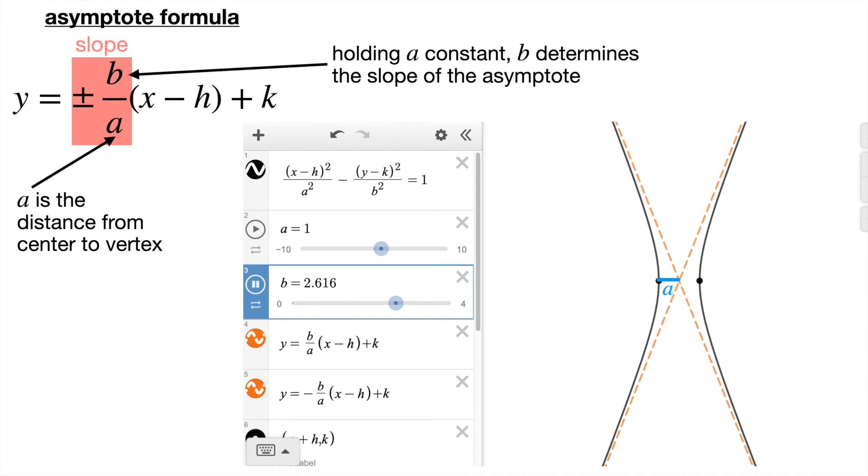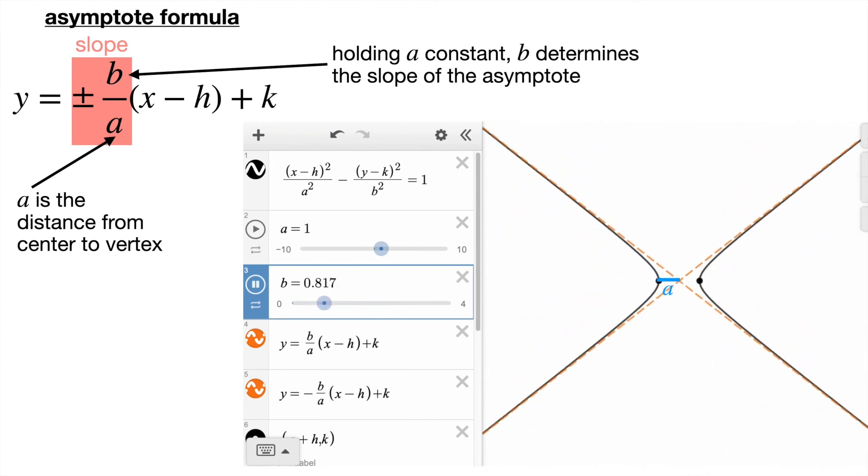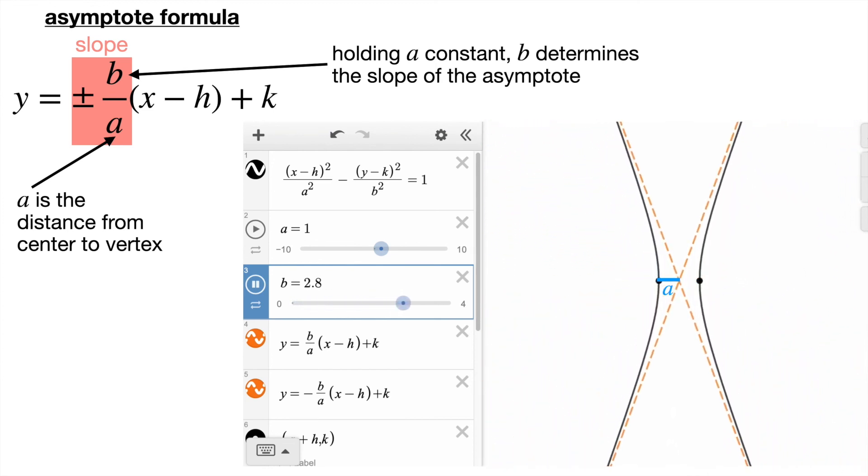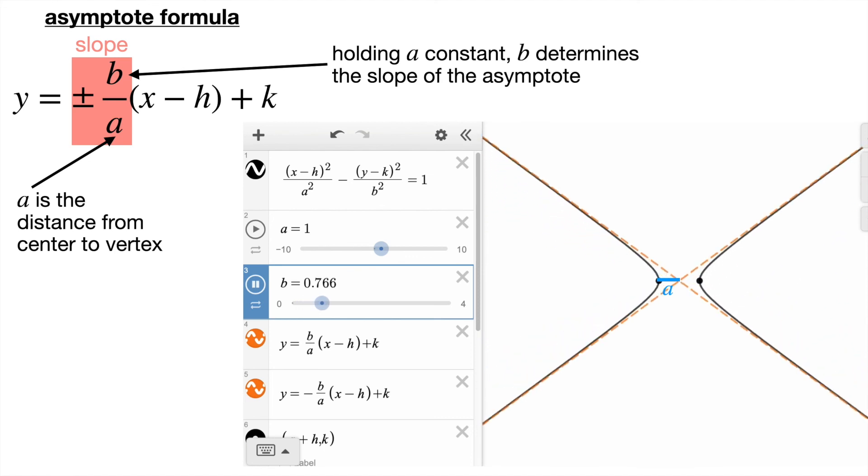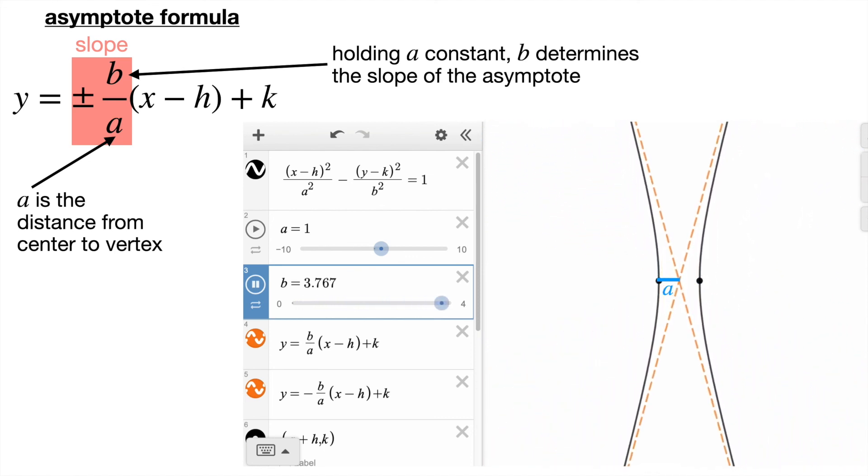So basically we have an asymptote formula. y equals that formula we derived in the previous spot. And if a is the distance from the center to the vertex, then b is the thing that when you hold a constant determines the slope of the asymptote. So here's a visual demonstration. If we change b but leave a constant, you see that a is always going to be the distance from the center to the vertex of the hyperbola, but that the slopes of the lines change. So what b is all about is the slope of the asymptotes.